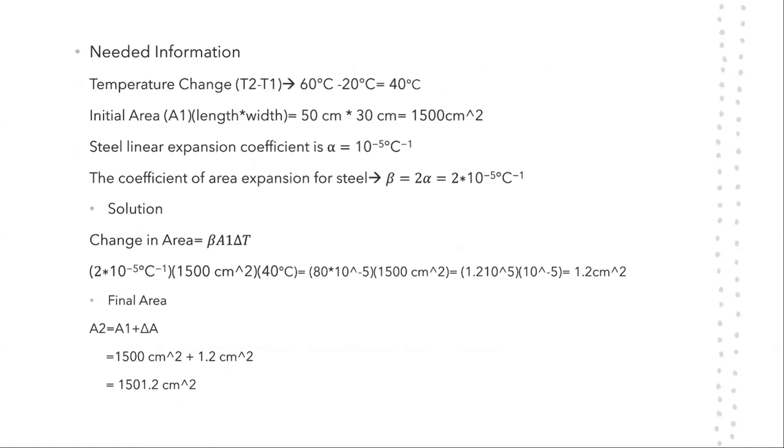So to solve this equation, the needed information will be the temperature change, initial area, and the expansion coefficient of steel. So the final temperature change in this case was 60 degrees Celsius, and the beginning was 20 degrees Celsius. In the end, we get 40 degrees Celsius. The initial area was the length times width, which was 50 centimeters times the 30 centimeters, equaling to 1500 centimeters squared. The steel linear expansion coefficient for steel is alpha equals 10 to the negative 5 degrees Celsius to the negative 1. Overall, this was linear information to get the changing area. And in order to get the changing area, we need to multiply the 2 times 10 to the negative 5 degrees Celsius negative 1, times the 1500 centimeters squared and the 40 degrees Celsius, in which the answer ends up being 1.2 centimeters squared. In order to get the final area, it would equal area 2 equals area 1 plus delta A, in which this case, it will be 1500 centimeters squared plus 1.2 centimeters squared, equaling to 1501.2 centimeters squared.